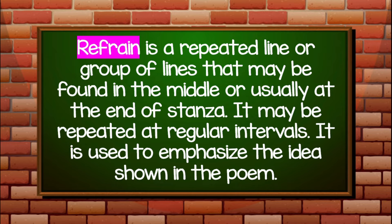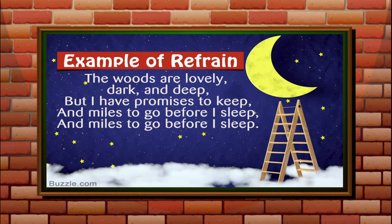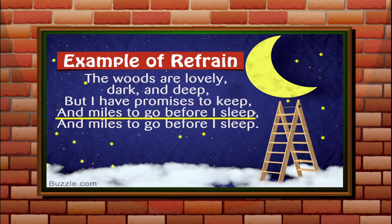Now let us go to the refrain. What is refrain? Refrain is a repeated line or group of lines that may be found in the middle or usually at the end of a stanza. It may be repeated at regular intervals. It is used to emphasize the idea shown in the poem. Let's have an example: 'The woods are lovely, dark and deep, but I have promises to keep, and miles to go before I sleep, and miles to go before I sleep.' There is a line being repeated — 'and miles to go before I sleep' — repeated in the fourth line. That is an example of refrain.